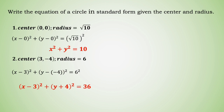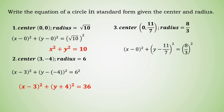For a third example, if the center is at 0 comma 11 over 7 and the radius is 8 over 3, we substitute: x minus 0 quantity squared plus y minus 11 over 7 quantity squared equals 8 over 3 squared. Simplified: x squared plus y minus 11 over 7 quantity squared equals 64 over 9.